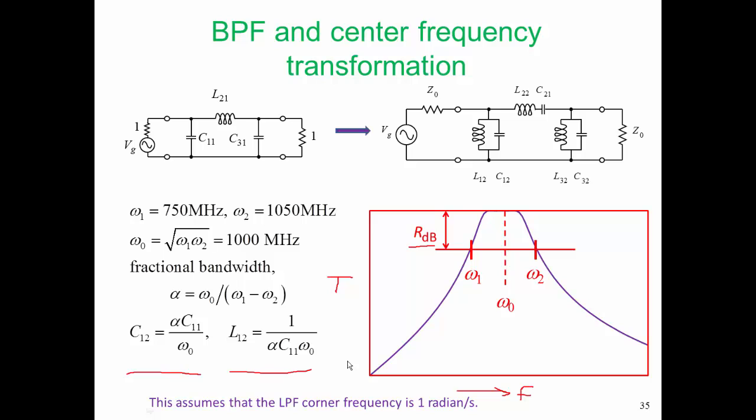Just remember that the low-pass corner frequency here is one radian per second. Some filter tables will give you filter parameters that are normalized to one hertz. In that case, you couldn't use these transformation formulas, you'd have to tweak them just a little bit.